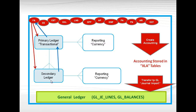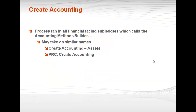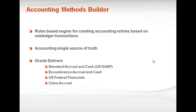One new capability: because you now have secondary ledgers, I bring the data into each ledger separately, but when I drill down, I have the capability to be in a secondary ledger, drill back to see how the accounting was handled in my primary ledger, and then drill back to my source transaction. From a developer standpoint, everything is in a single location. What is create accounting? It is a process run in all financial-facing subledgers which calls the Accounting Methods Builder. Create accounting may take on similar names — payables and receivables use 'create accounting,' Oracle Assets uses 'create accounting-assets,' and Projects uses 'PRC: create accounting.'